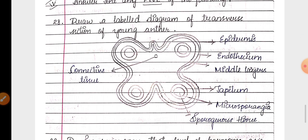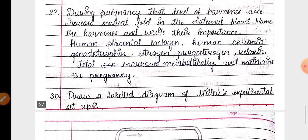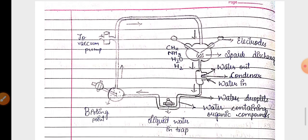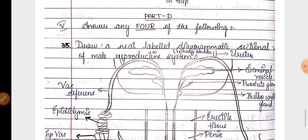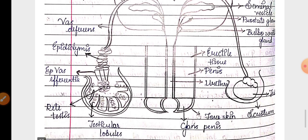Part C, three marks question, the diagram of TS of anther. Then related to pregnancy hormones, question has been given. Then from evolution chapter, Miller's experiment diagram, labeled diagram.